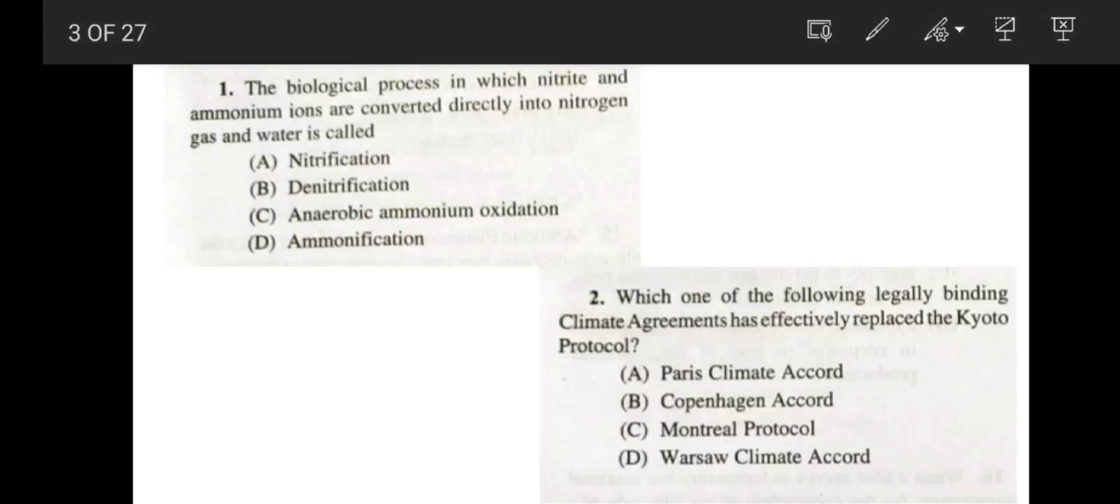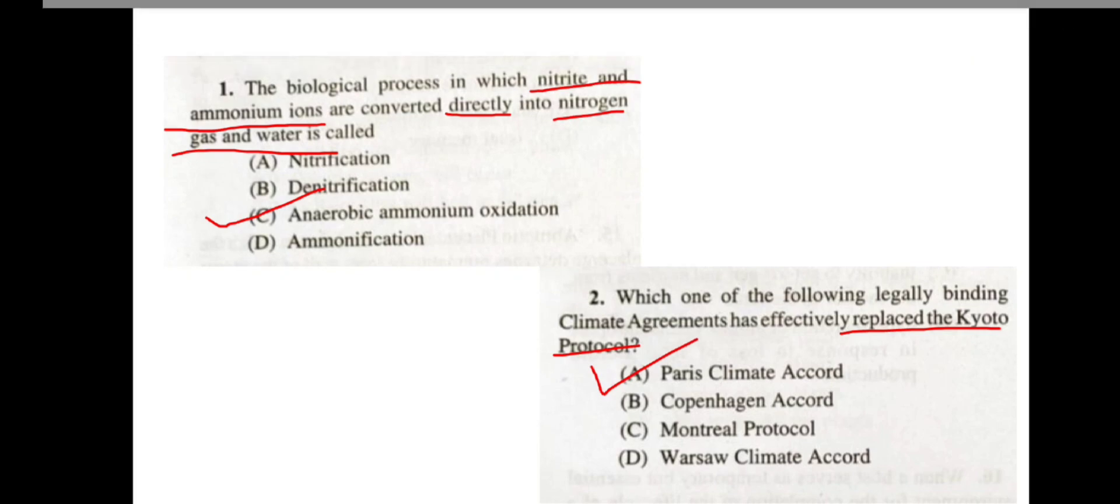First question. The biological process in which nitrite and ammonium ions are converted directly into nitrogen gas and water is known as anamox or anaerobic ammonium oxidation. Correct answer is option C. Next, which one of the following legally binding climate agreements has effectively replaced the Kyoto Protocol? Paris Climate Accord has replaced the Kyoto Protocol. So correct answer is option A.